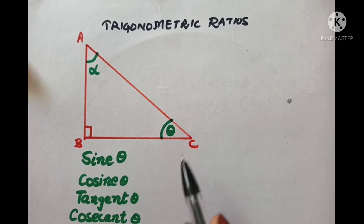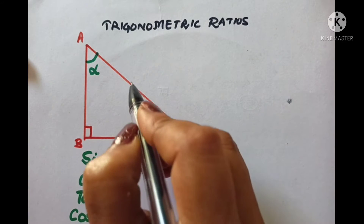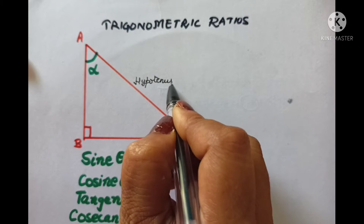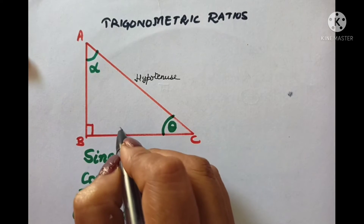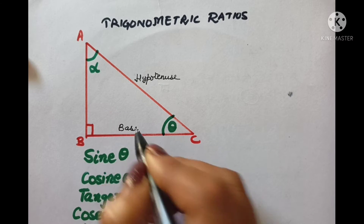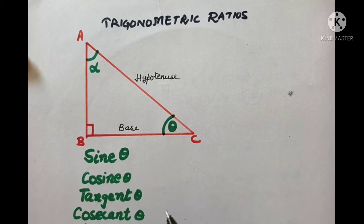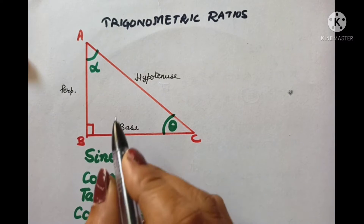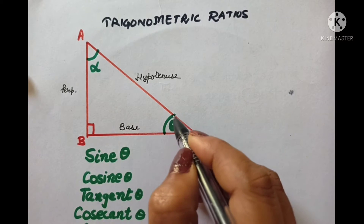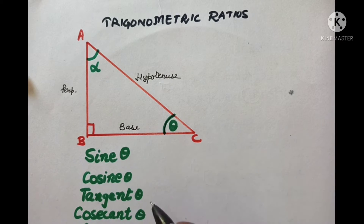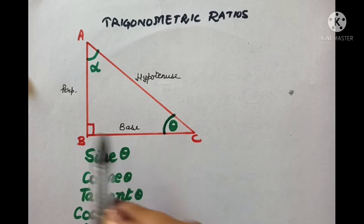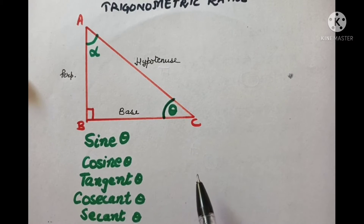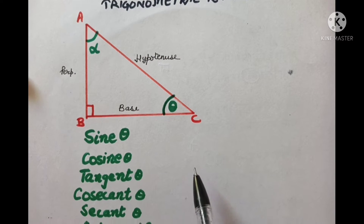In a right-angled triangle, this is the hypotenuse. This is the base which is lying horizontally and this is the perpendicular which lies vertically. Now, if we are considering the angle theta, then this is the base and this is the perpendicular, and we have six types of trigonometric ratios.